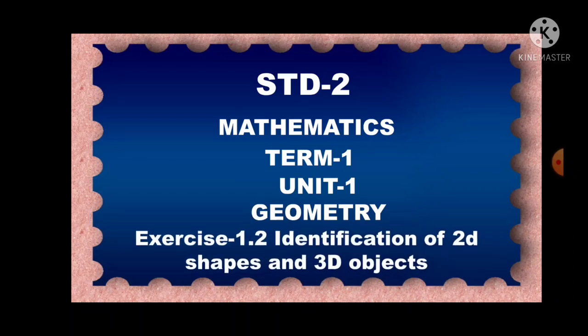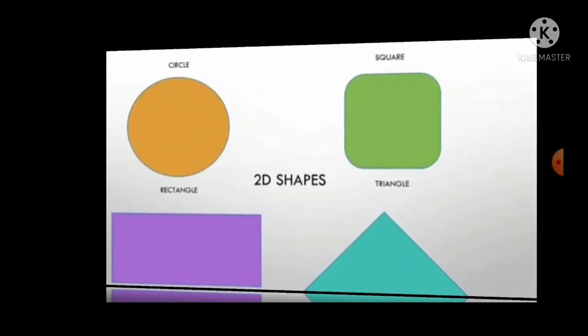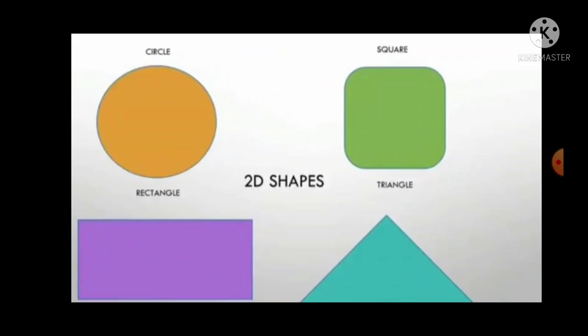Identification of 2D Shapes and 3D Shapes. What is this? Yes, it is 2D Shapes. 2D means two dimensional. It has two measurements, one is length and another one is breadth. What are the 2D Shapes? Square, Rectangle, Triangle and Circle.